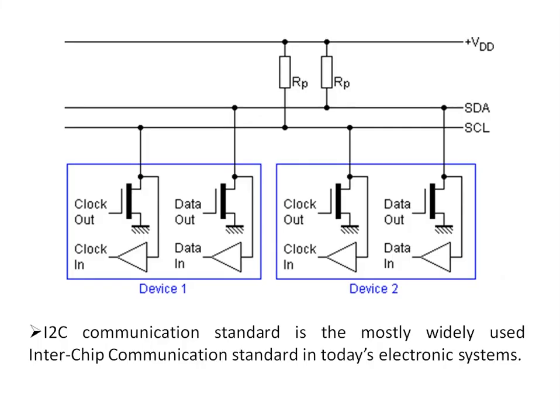The I2C communication standard is the most widely used inter-chip communication standard in today's electronic systems. Many IC manufacturers include the I2C protocol feature in their ICs. Different ICs like EEPROMs, real-time clocks, ADCs, and DSCs use the I2C protocol for communicating data to the microprocessor or microcontroller. Each device supporting I2C has two pins: SDA and SCL.